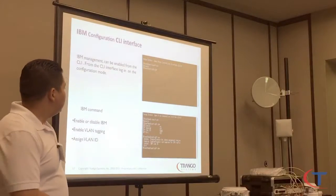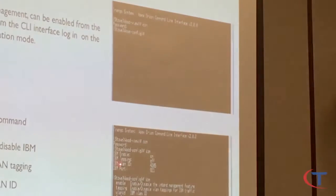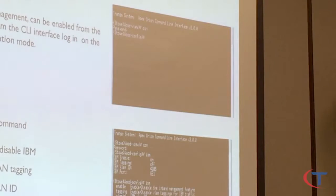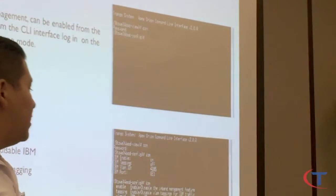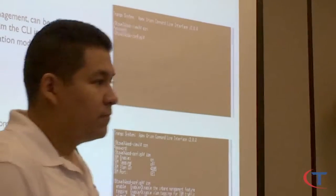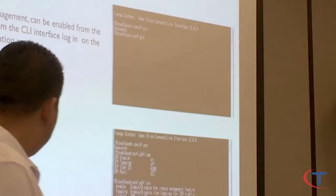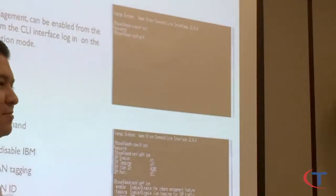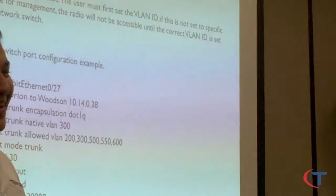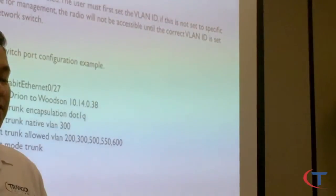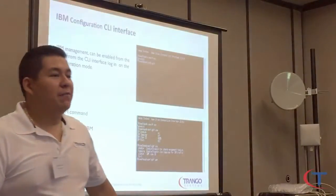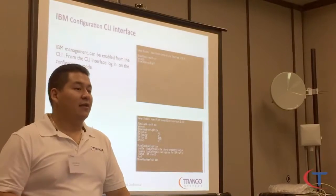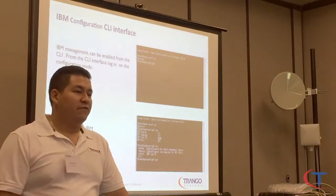IBM configuration from the CLI: IBM enable on. The first command is going to be IBM VLAN ID — you set your VLAN ID, and then you enable the tagging. On the config save, if you add the VLAN ID, nothing's going to happen because you have not enabled the tagging. So unless you do the actual tagging, you're going to get locked out. The order matters: set VLAN ID first, then enable tagging.